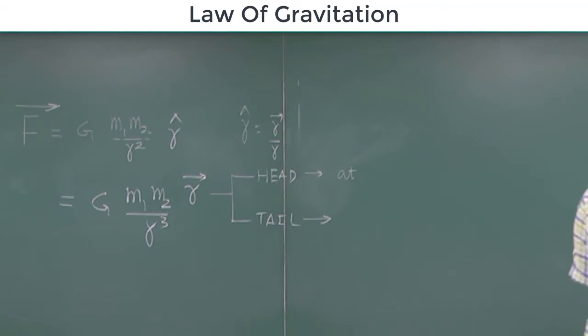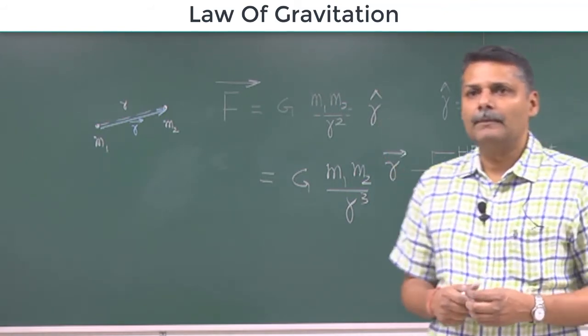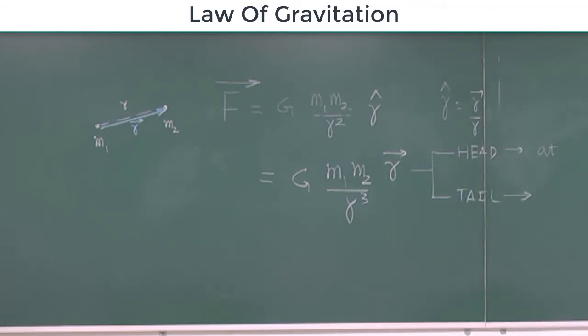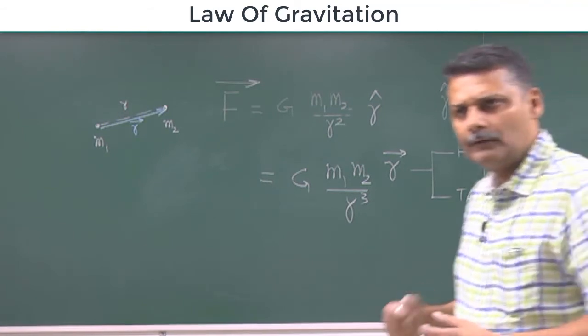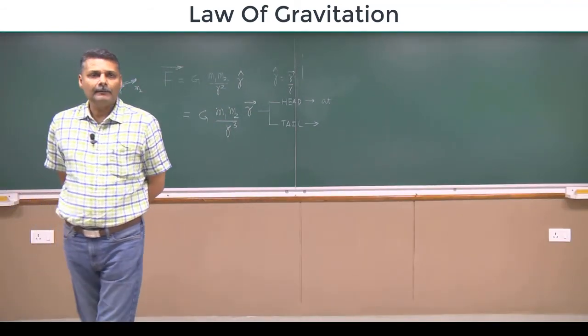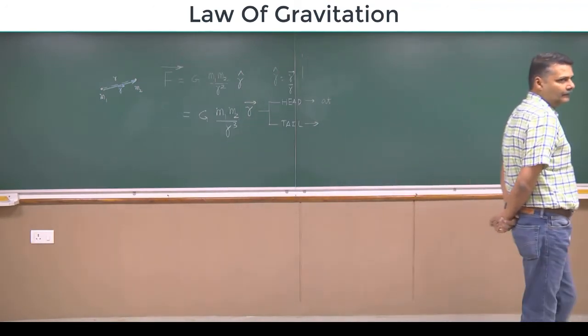Tail at... what is that? M1. M1 is the cause of force. Tail where? At environment. Tail at environment. In bracket you can write the cause of force. Tail at environment. Environment means what? Cause of force.